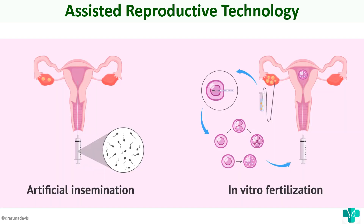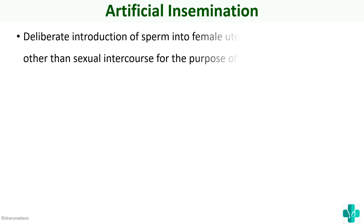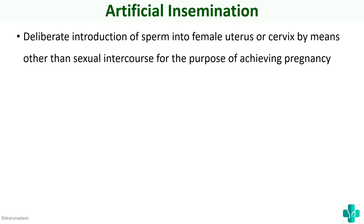The next assisted reproductive technology is artificial insemination. The first step in artificial insemination is ovarian stimulation itself — we stimulate the ovary and make sure the ovum has developed properly. Then we prepare the semen, and the semen is introduced into the female genital tract so that fertilization will occur naturally.